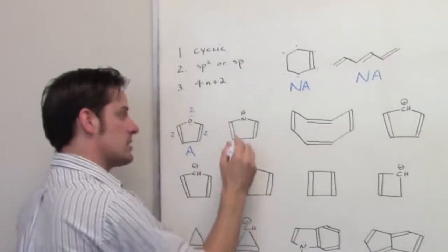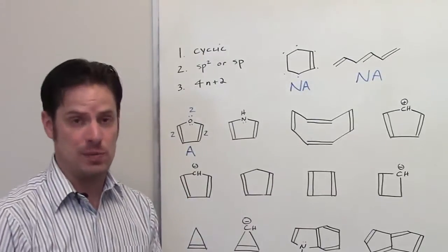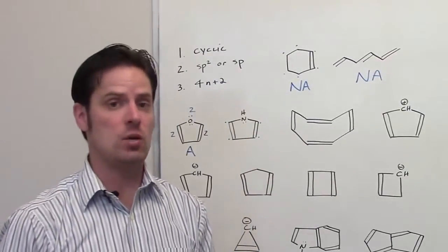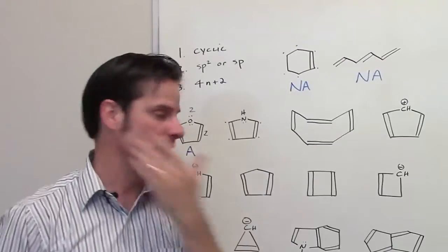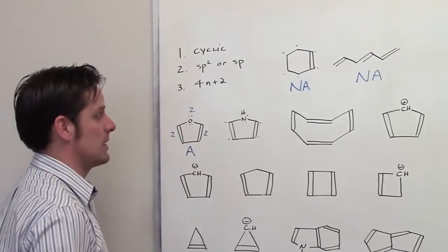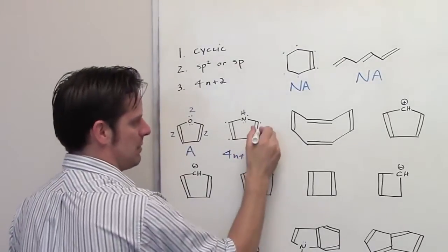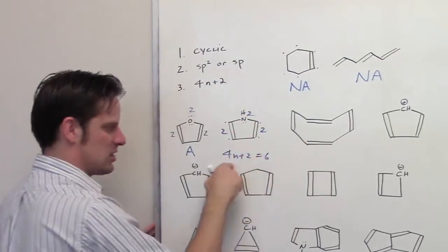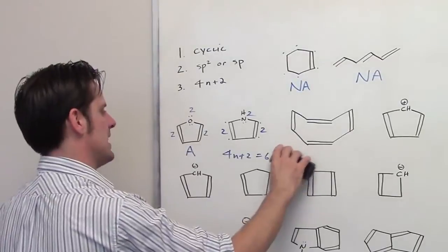Let's look at this compound — there is a set of lone pairs on that nitrogen. Is the molecule cyclic? Yes. Are all the atoms in the ring sp2 or sp hybridized? The carbon atoms are, and the nitrogen has lone pairs. Remember, lone pairs are flexible, so the nitrogen can re-hybridize to become sp2. It meets criteria 1 and 2. For criterion 3: I've got a double bond (2), another double bond (2), and one set of lone pairs (2) — total 6 pi electrons. Can I solve 4n + 2 = 6? Yes, n = 1. So this molecule is aromatic.